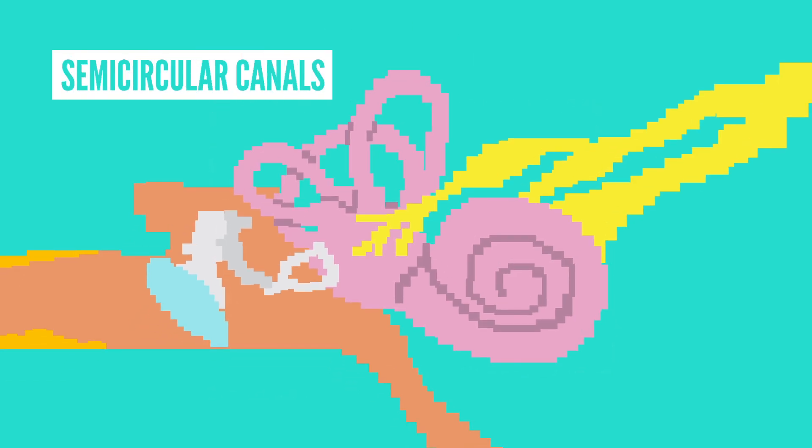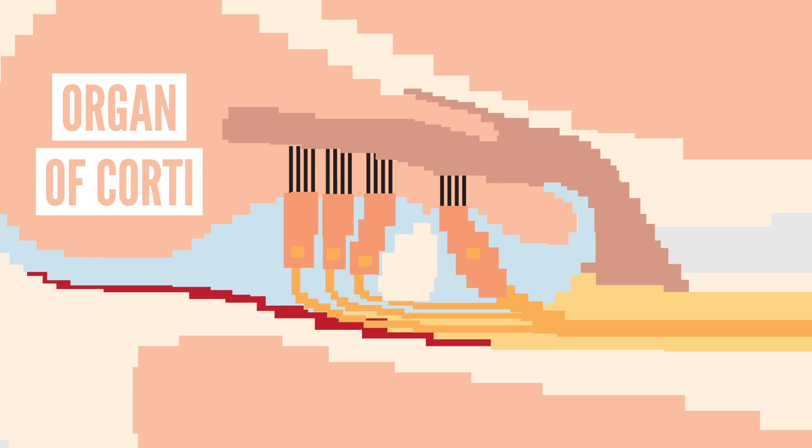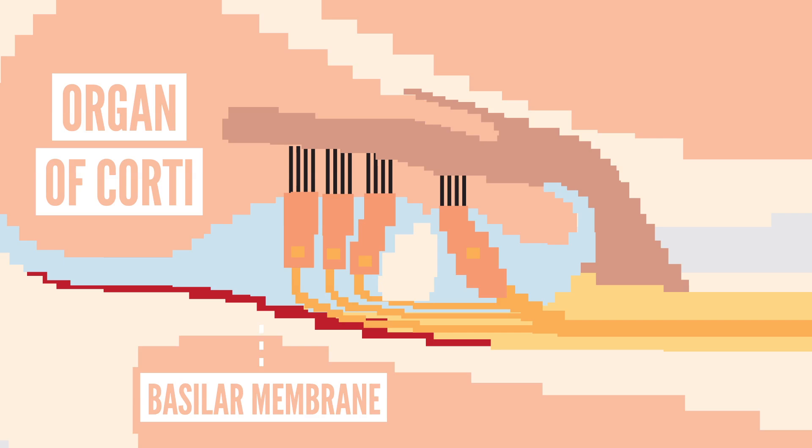From here, we have two main structures: the semicircular canals, which are in charge of balance, and the cochlea, which is what we really care about. This is essentially your body's microphone, converting sound pressure waves into electrical impulses that are eventually sent to the auditory nerve and then to the brain. This transition occurs in the organ of Corti, which sounds way too royal to be a body part. It sits on top of the basilar membrane and contains up to 20,000 tiny hair cells, and the place along this membrane where the most hair cells are excited determines the pitch of the sound.